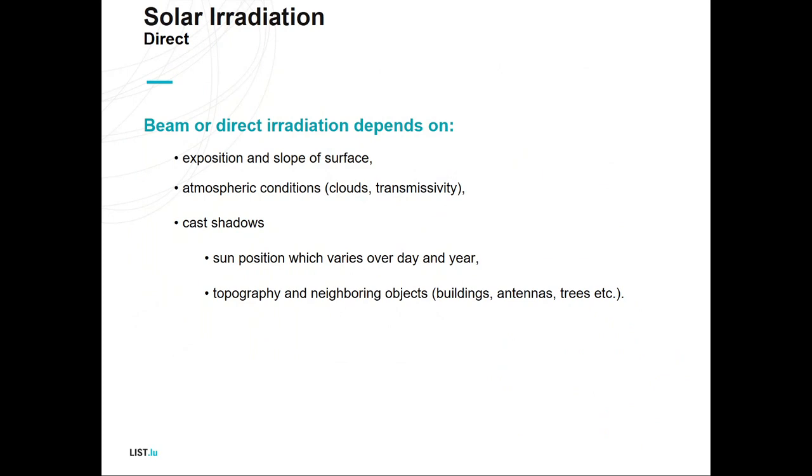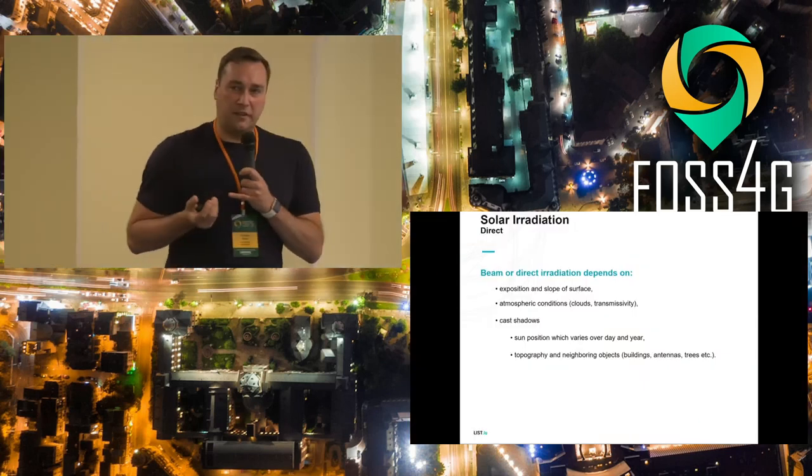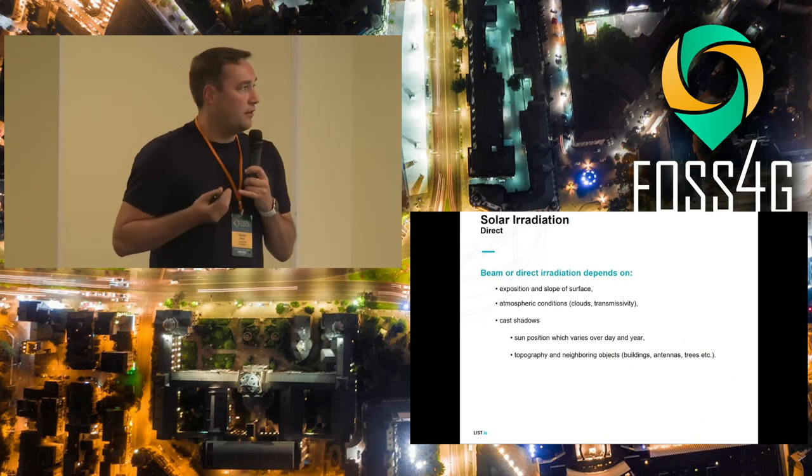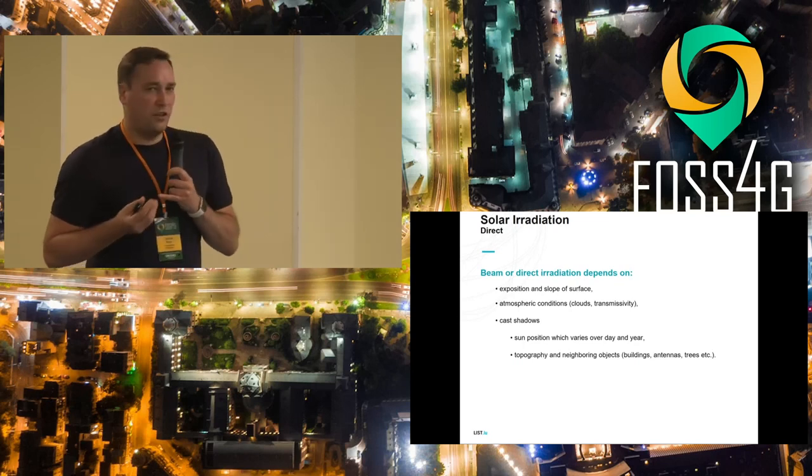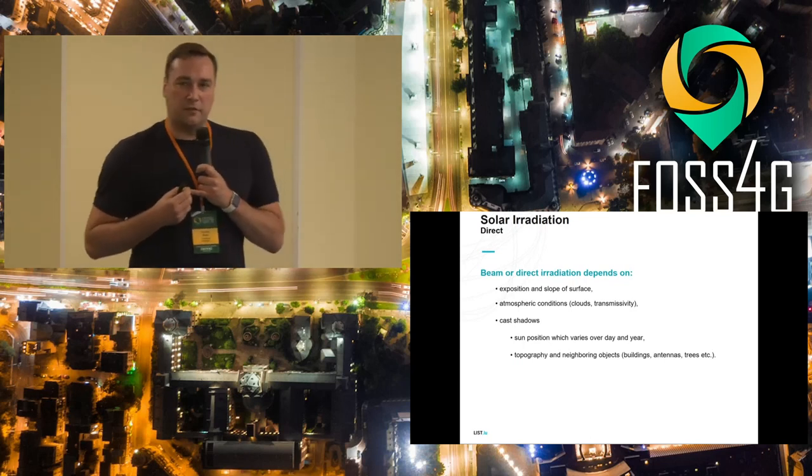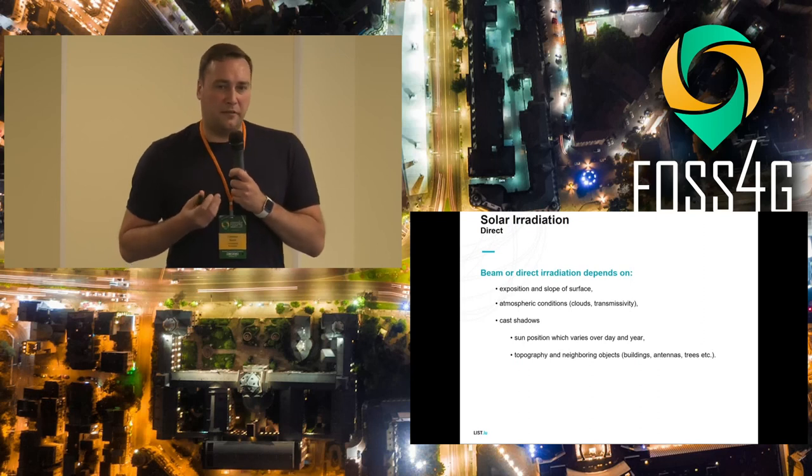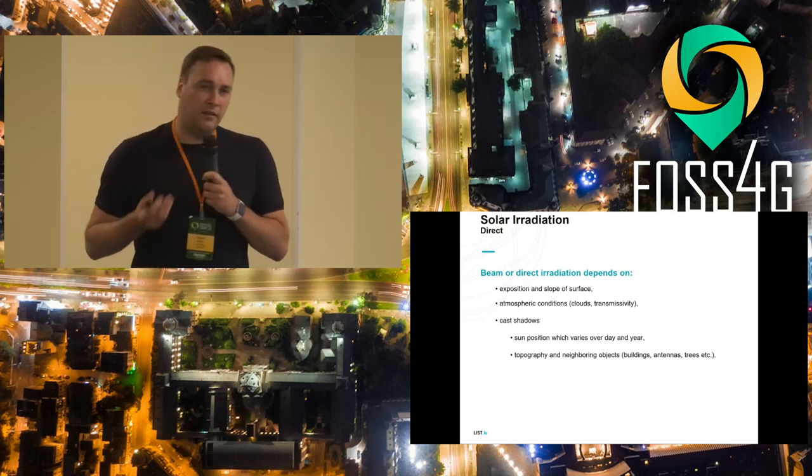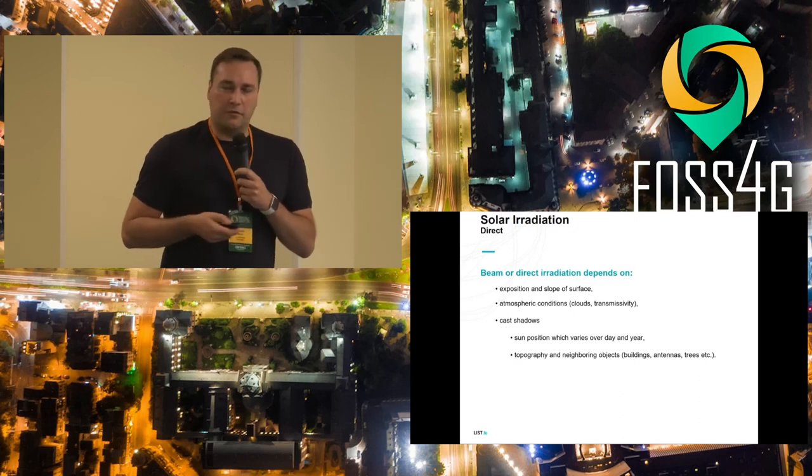The other part is the direct irradiation. This is also dependent on the exposition and slope of the surface. So how is this solar panel oriented to the Sun in that case? It's obviously depending on atmospheric conditions like clouds and the transmissivity of the atmosphere. Do I have a lot of dust in the atmosphere? And cast shadows from other buildings or chimneys or antennas. Another point is that the sun position is varying over the course of the day and obviously over the year. If one panel is facing to the east, you will get more sun in the morning because sun is rising there, less than in the evening and vice versa. Obviously it's the optimum if the panel is oriented to the south.